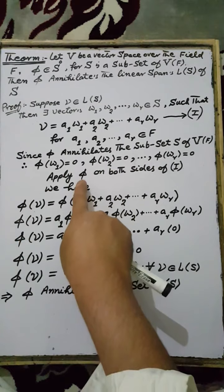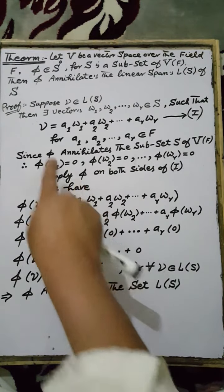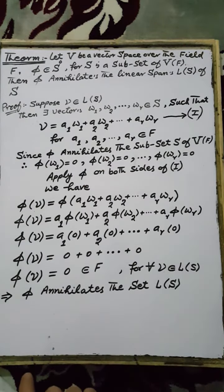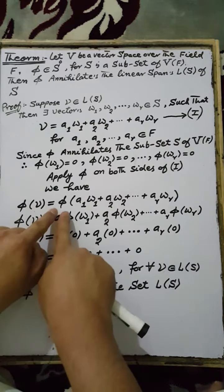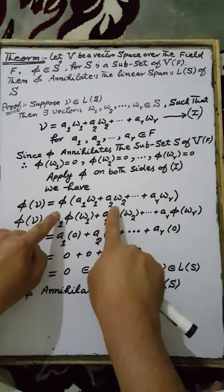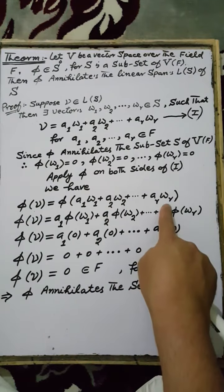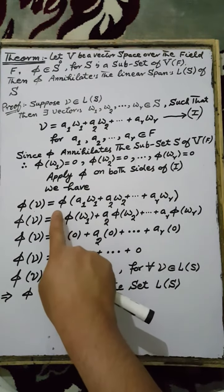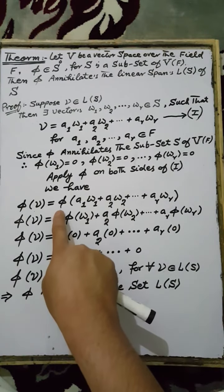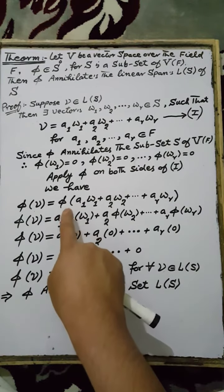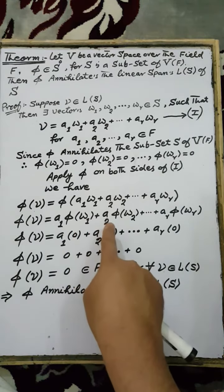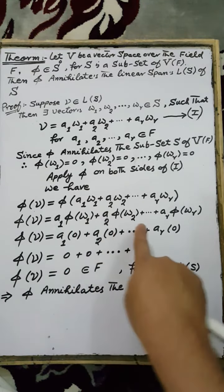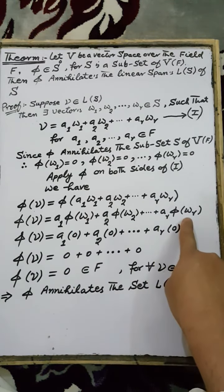Applying the linear functional Phi on both sides of equation number one, we have Phi(V) = Phi(A1·W1 + A2·W2 + ... + AR·WR). As Phi is a linear functional, by definition this equals A1·Phi(W1) + A2·Phi(W2) + ... + AR·Phi(WR).